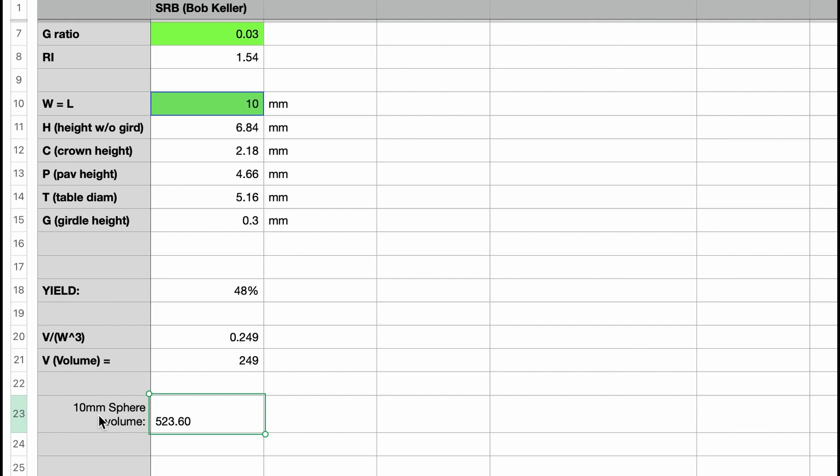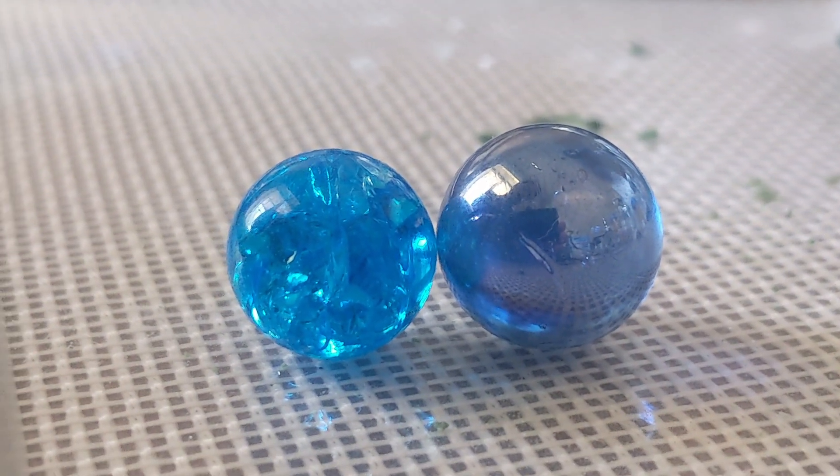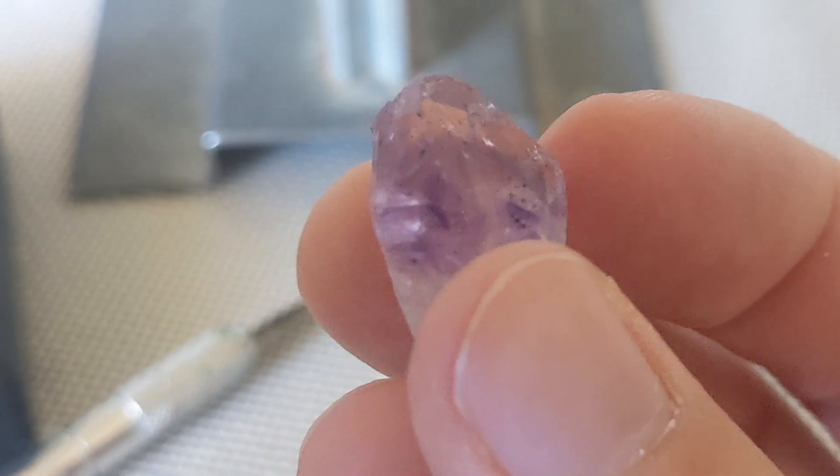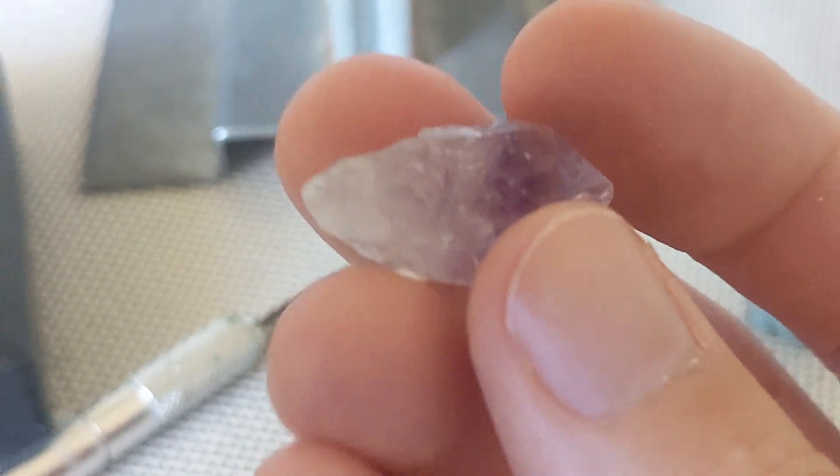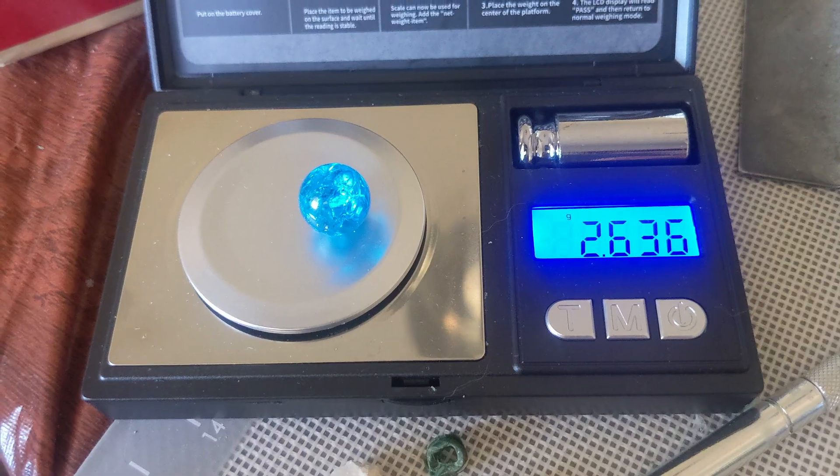But why then isn't a 40 or 50% yield normal? It's because of the exponential increase in volume with slight increases in diameter. If that perfect sphere was 12mm, and you cut the same 10mm SRB, your yield plummeted to 30%. Just 2mm made a huge difference. And that's for a perfect sphere. In natural stones, there's often inclusions and fractures to cut out, or the shape isn't ideal and extra bits get ground off.